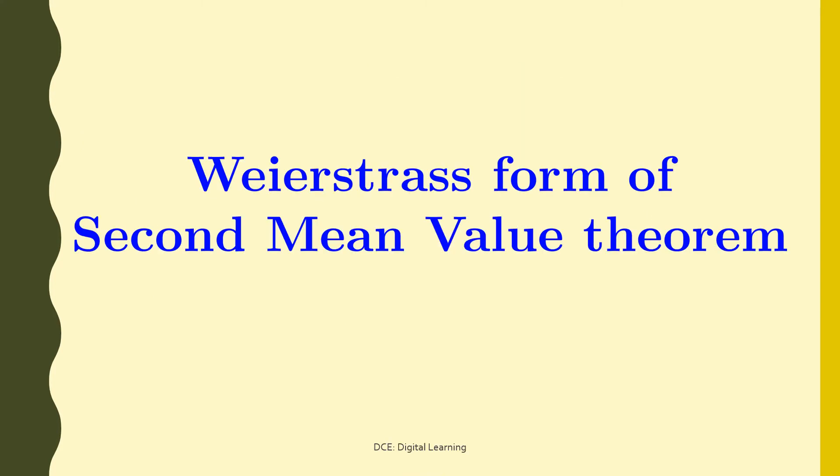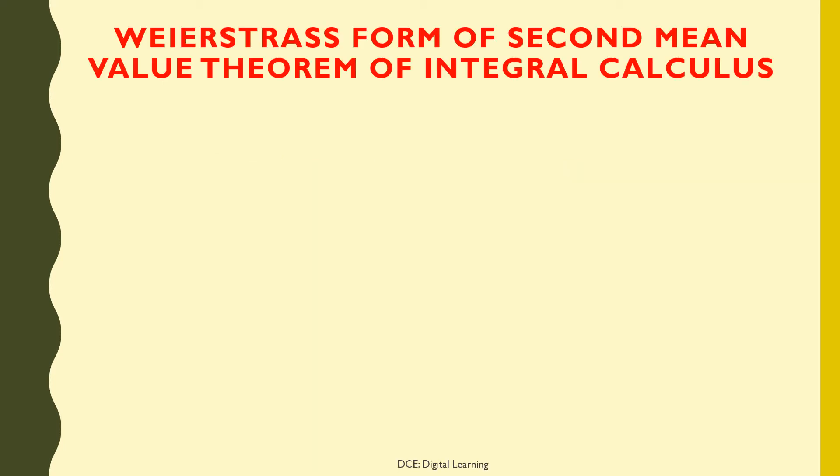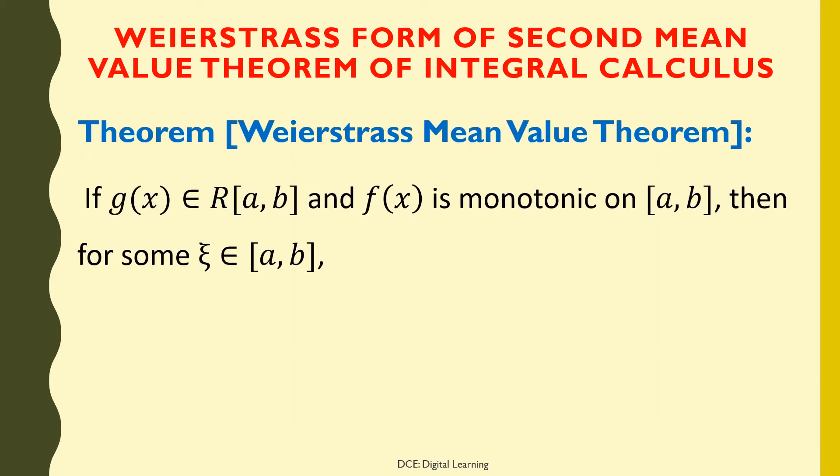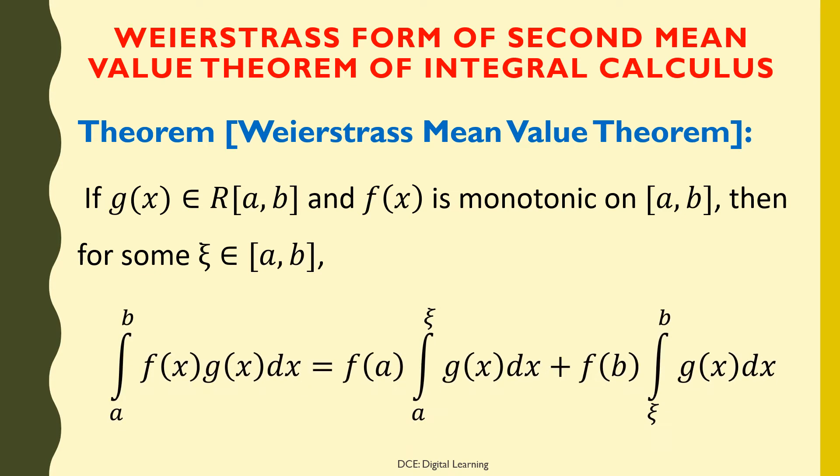Now we will state and prove the Weierstrass form of the second mean value theorem. Weierstrass Mean Value Theorem: The integral of f(x)·g(x) dx from a to b equals f(a) times the integral of g(x) dx from a to ξ, plus f(b) times the integral of g(x) dx from ξ to b.